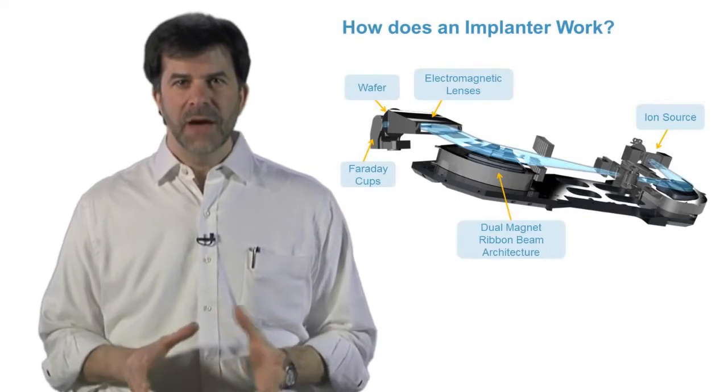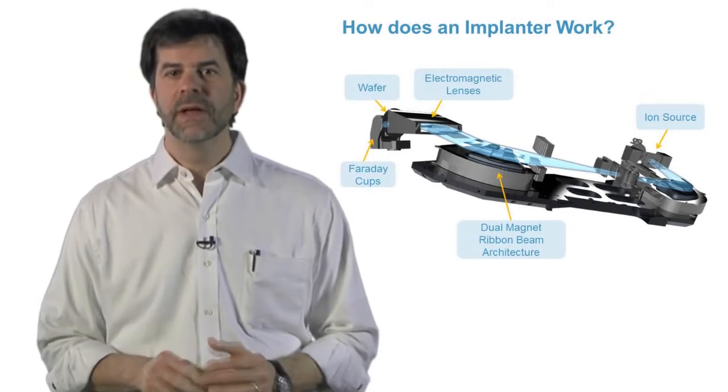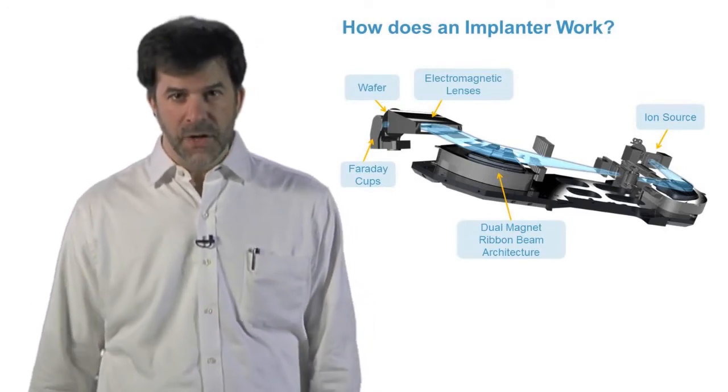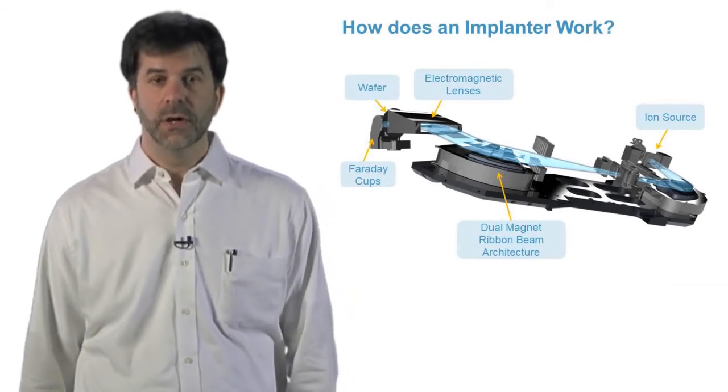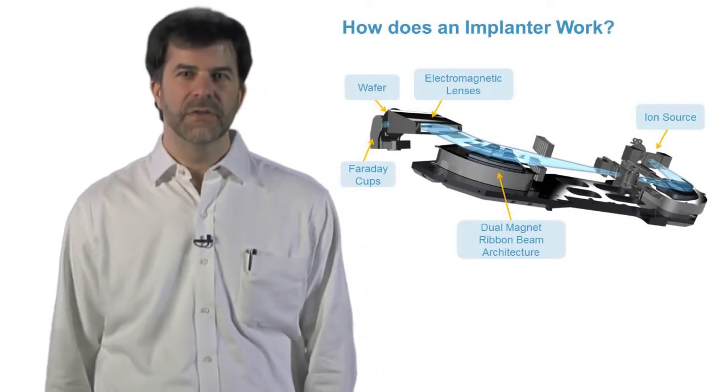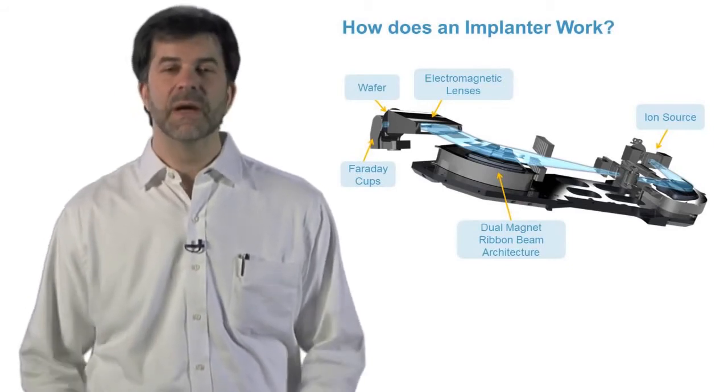The ion beam now enters the beam line which is quite different from implanter to implanter. High current implanters have focusing lenses to prevent the beam from diverging and also acceleration and deceleration capability and are relatively short. Medium current implanters have lenses and acceleration and also a scanner that creates a ribbon beam from the pencil beam that exits the mass analysis magnet.